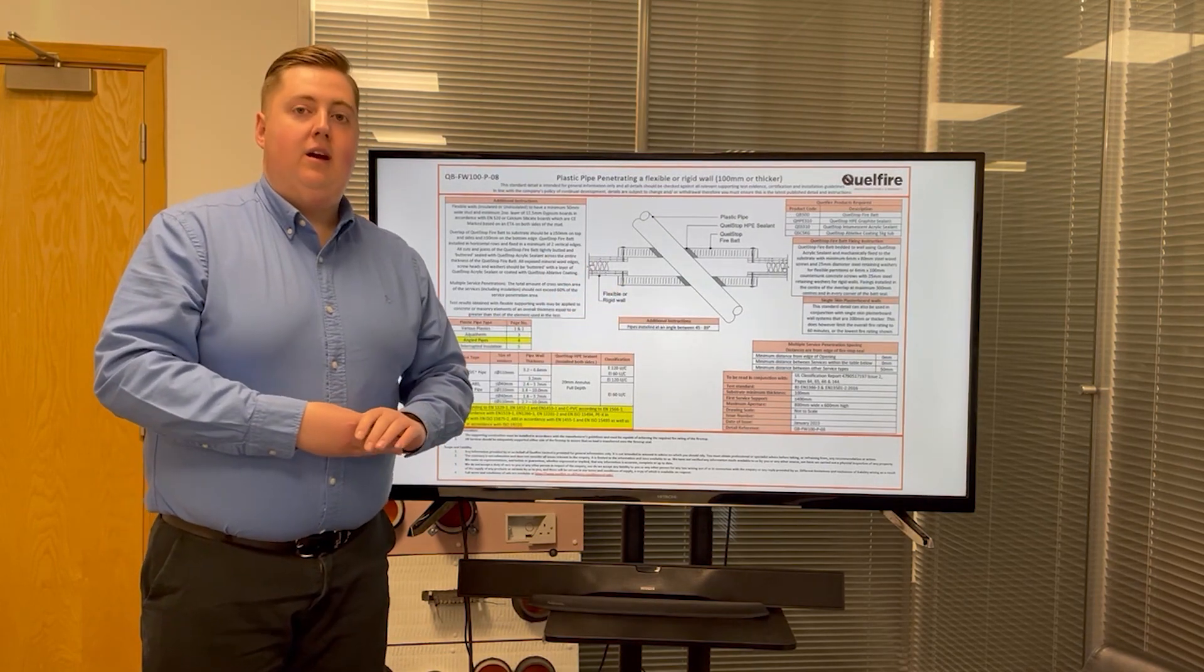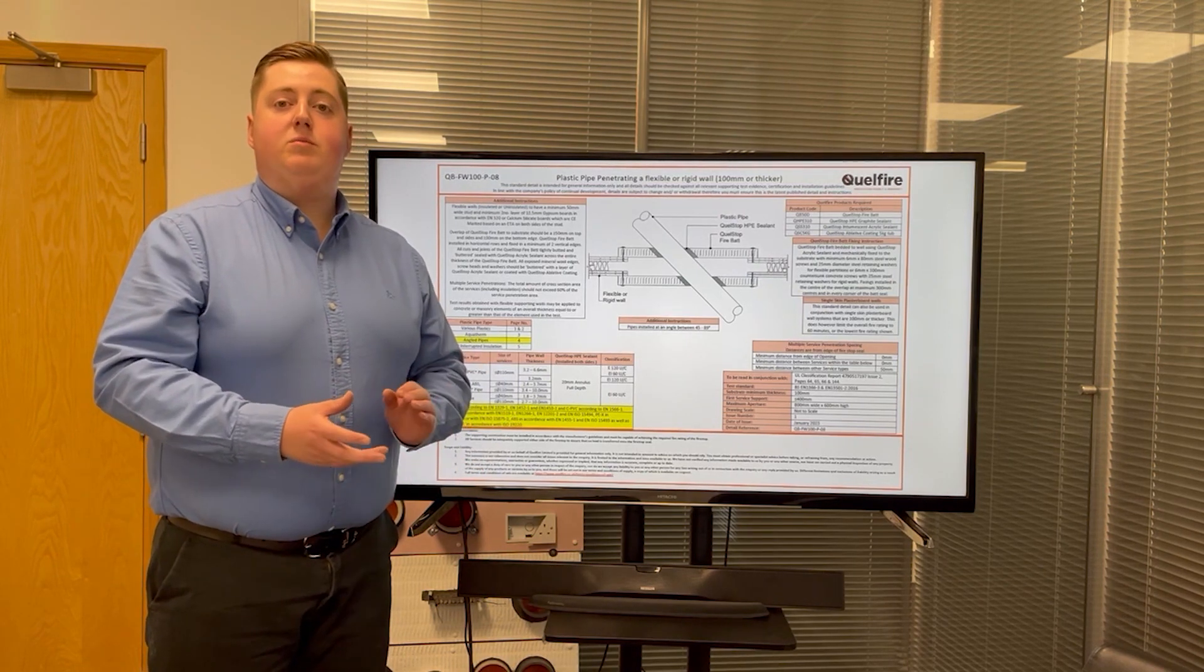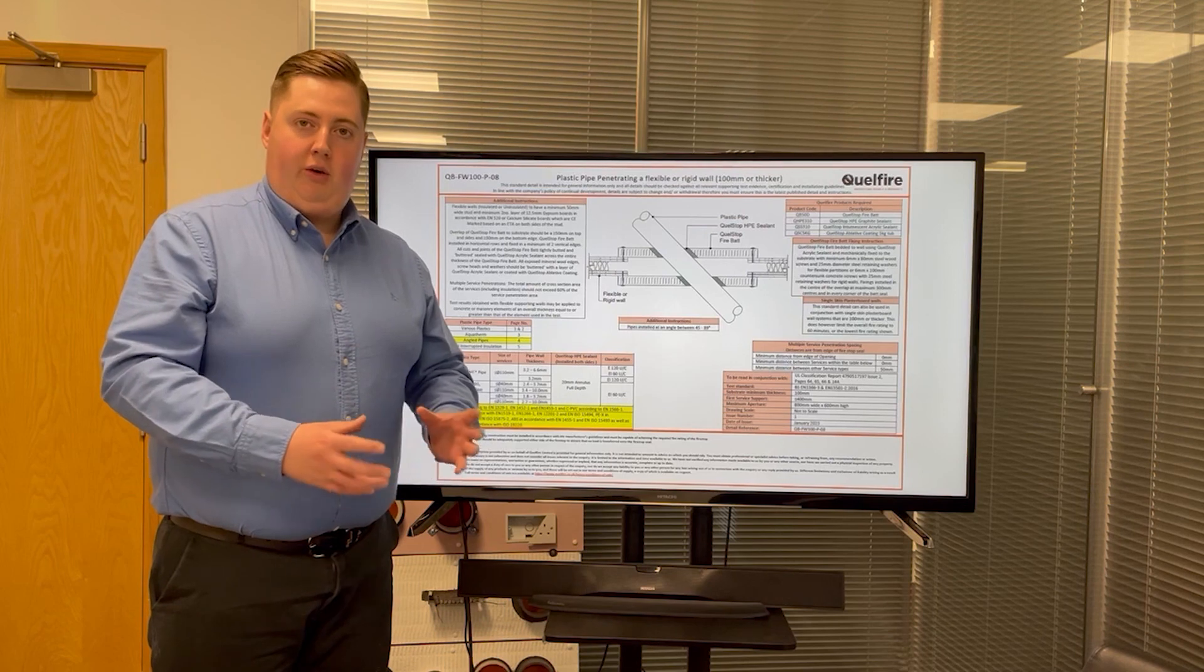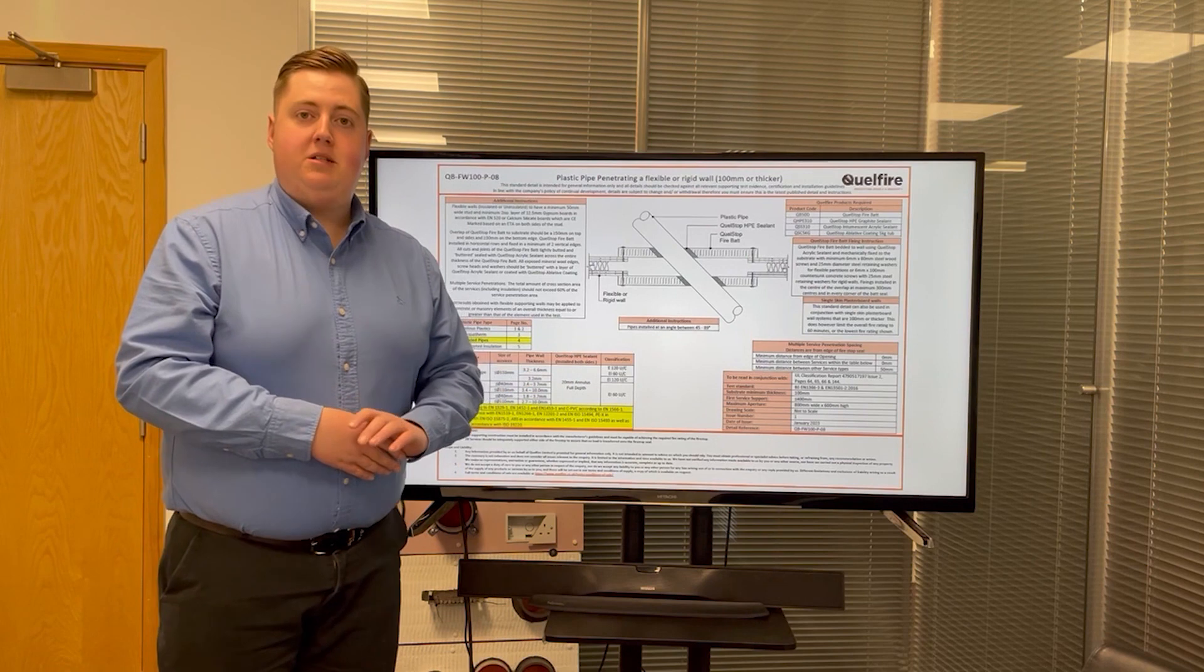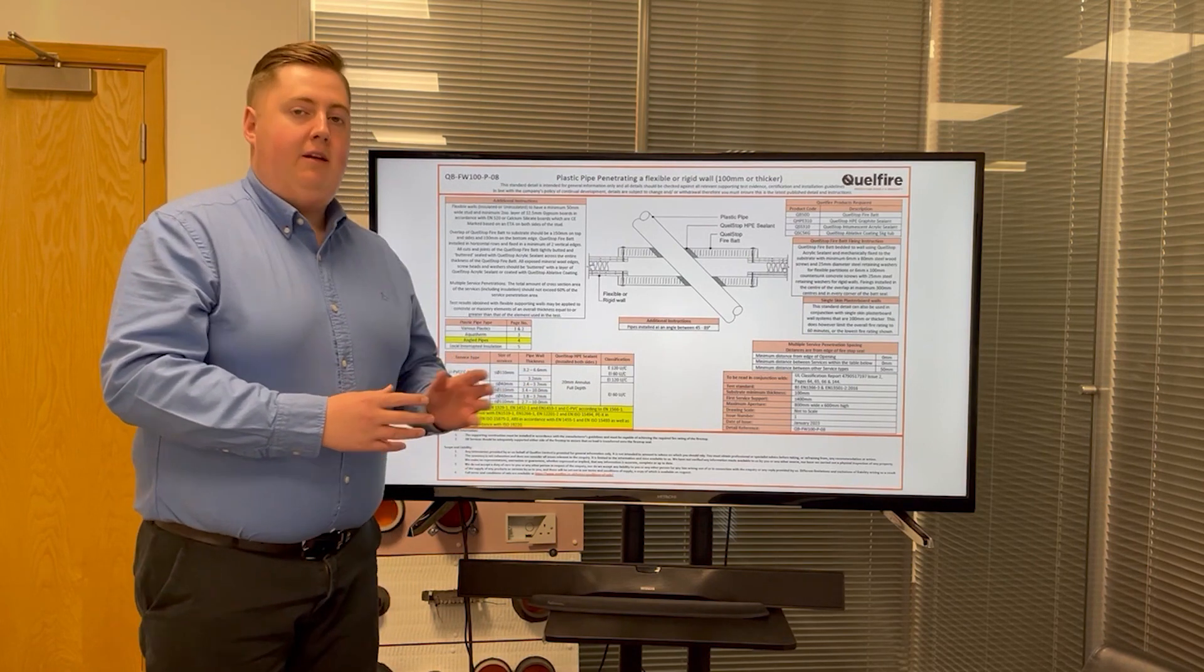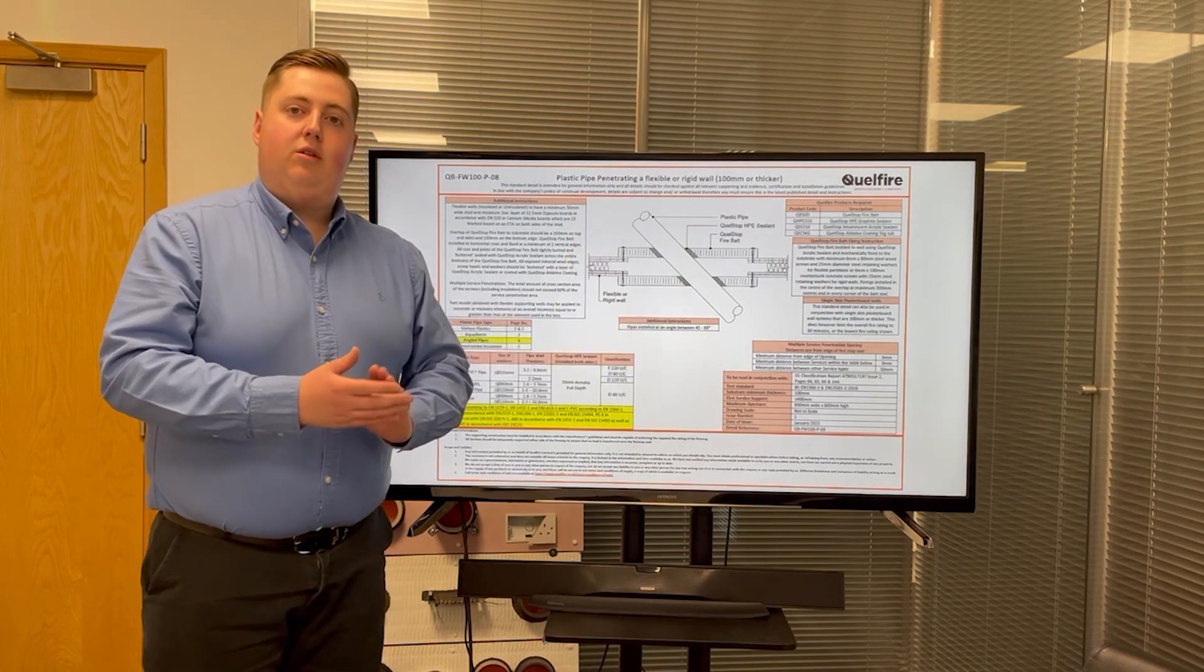We've also tested insulated copper pipes, insulated with non-combustible rock fibre insulation and sealed using the Quellstop intumescent acrylic sealant, again at angles between 45 degrees and 90 degrees through the wall.